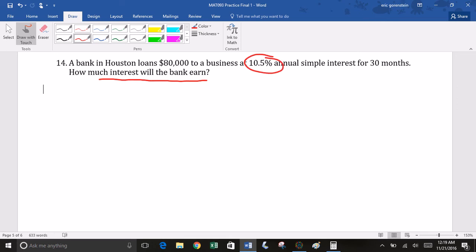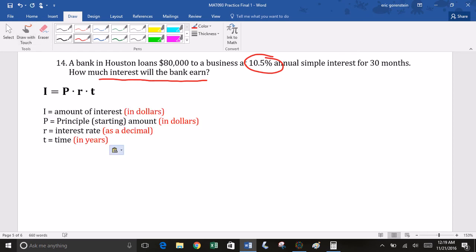To calculate this, we're going to need the formula for interest. And there's different types of interest. In this case, we're looking at specifically simple interest. So the formula for simple interest, I is equal to P times R times T. So there's our formula for simple interest.